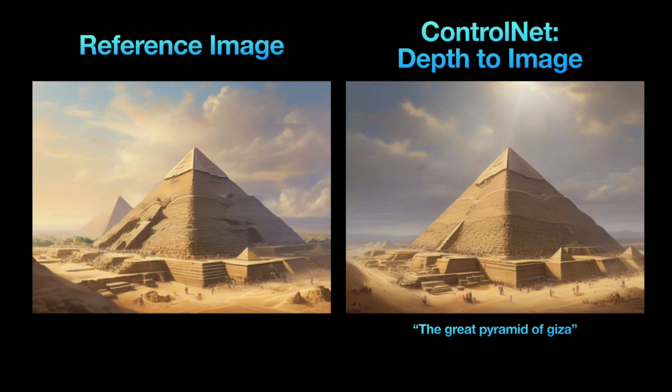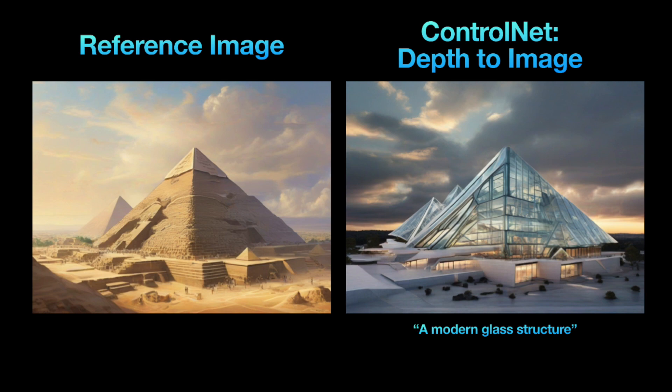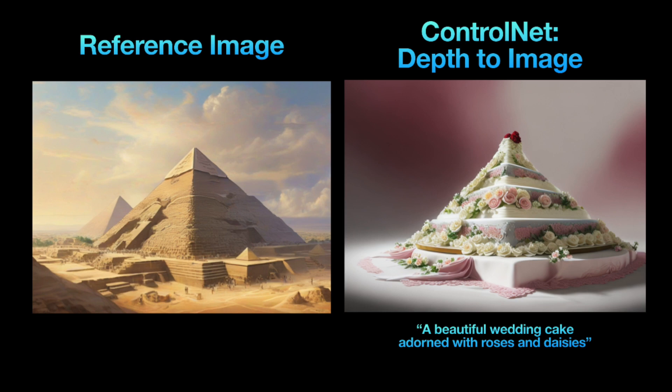Depth to image in ControlNet is a feature that looks at the depth of an input picture and uses this info as a guide to add 3D effects to the output image. You can enhance the three-dimensional aspects of the same image, like in this example of the Giza pyramid. Another option is to use the 3D features of a reference image to create something entirely different, as seen in this picture of a modern glass structure. My favorite is using the Giza pyramid to make an image of a wedding cake — even though the theme is different, the same 3D structure is kept in the generated image.